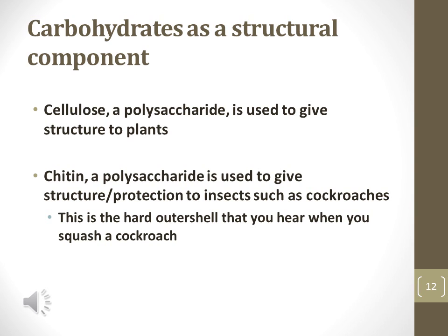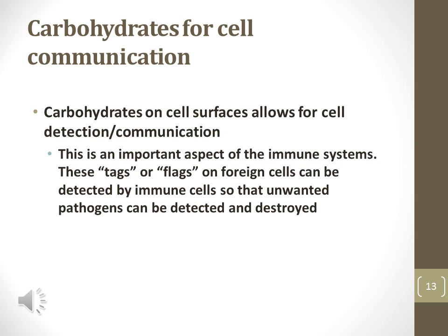Carbohydrates like cellulose are not used for energy but used for structural support. Cellulose gives structural support to plants while chitin gives structural support to insects like roaches. Other carbohydrates assist in cellular communication. Carbohydrates found on a cell membrane help cells recognize and communicate with each other in a variety of ways. Carbohydrates on the cells of your body allow your immune system to recognize it.